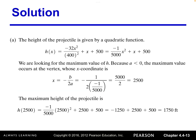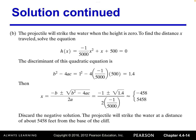Looking at the detailed step-by-step solution: for part (a) the maximum height is 1750 feet, and for part (b) the projectile strikes the water at approximately 5458 feet from the base of the cliff.